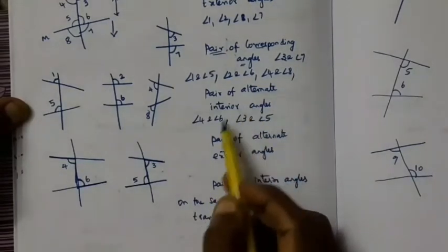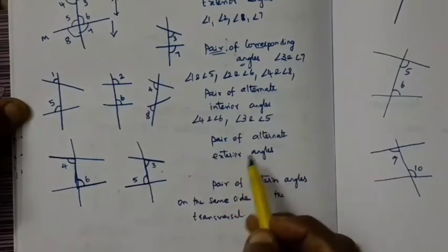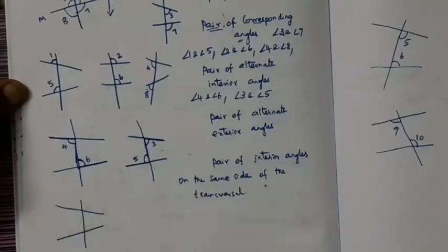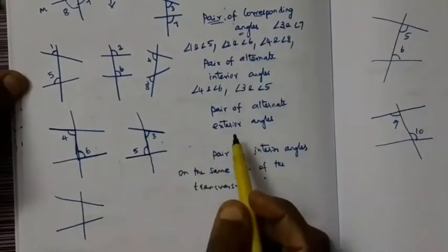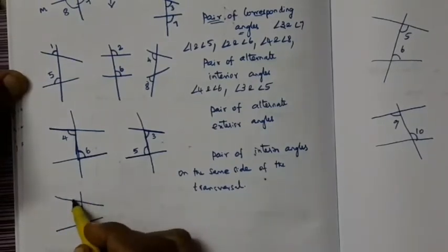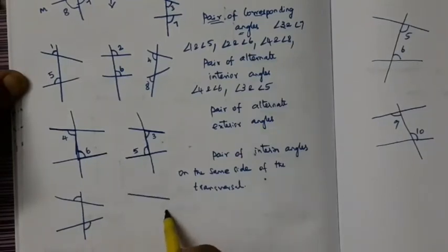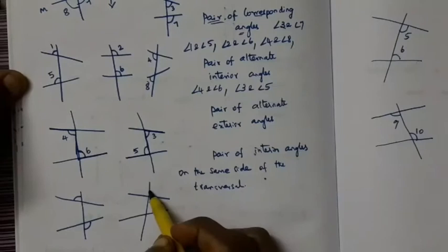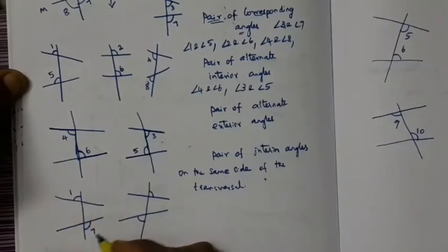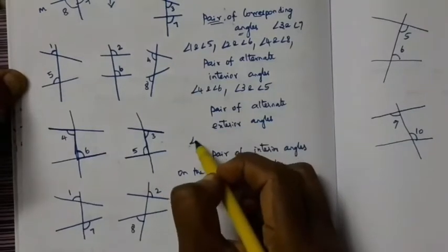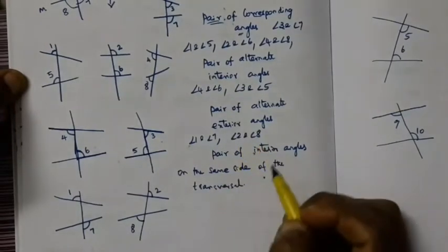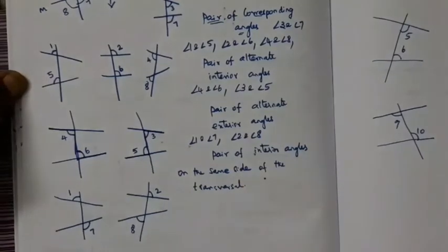Next is the pair of alternate exterior angles. The exterior angles are those outside the two lines. One pair is angle 1 and angle 7, and another pair is angle 2 and angle 8. There are two pairs of alternate exterior angles.